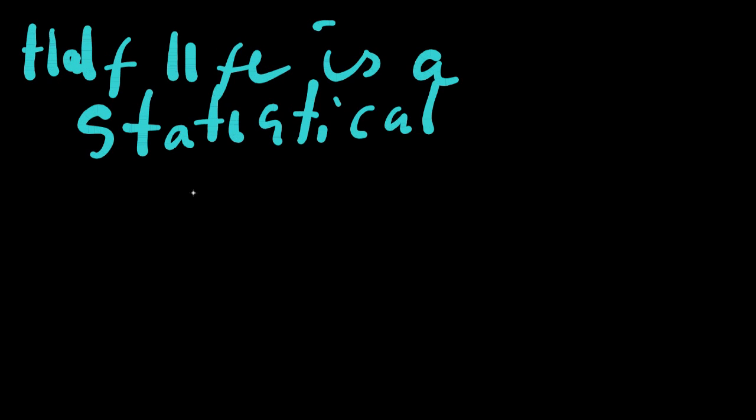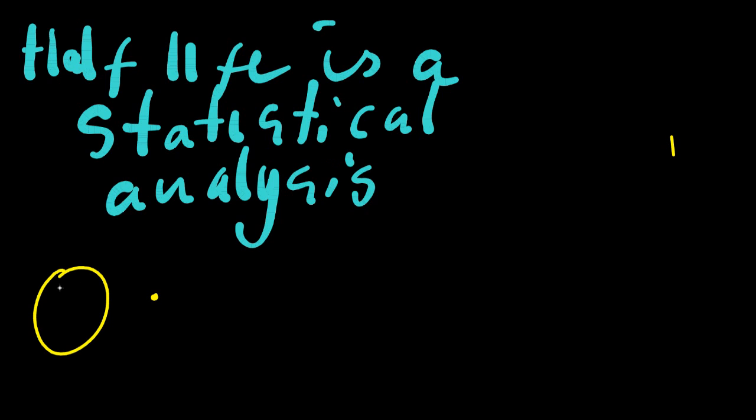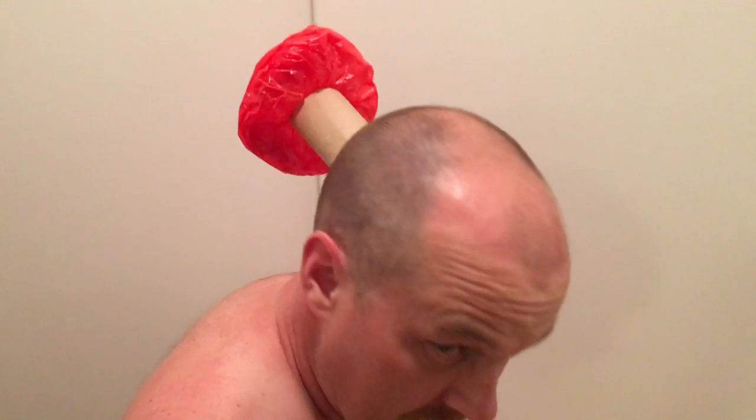One thing I also need to mention, because it came up on last year's exam, is that half-life is a statistical analysis. That means if you just look at one atom, you won't be able to use half-life to determine when it will decay. It only works if you have a large number of atoms. Then you can apply that mathematical technique.